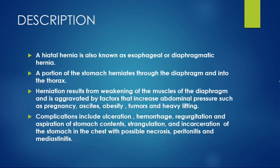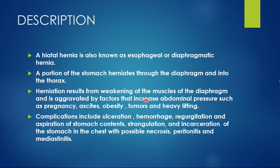Hiatal hernia is also known as esophageal or diaphragmatic hernia, or stomach hernia, in which a portion of the stomach herniates through the diaphragm and into the thorax. Herniation results from the weakening of the muscles of the diaphragm and is aggravated by factors that increase abdominal pressure, such as pregnancy, ascites, obesity, tumors, and heavy lifting.